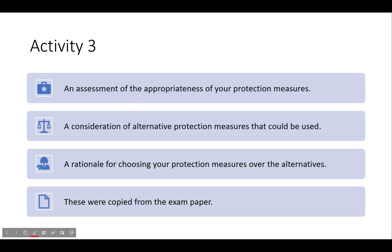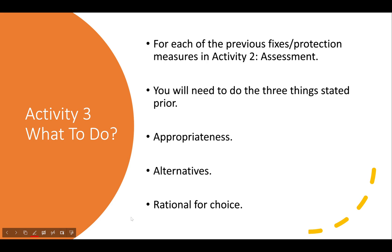Activity 3 is an assessment of the appropriateness of your protection measures. These three things are what they tell you on the exam paper — they don't give you a template but they do tell you essentially what to speak about. So: an assessment of the appropriateness of your protection measures, a consideration of alternative protection measures that could be used, and a rationale for choosing your protection measure over the alternatives. These were copied directly from the exam paper.